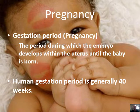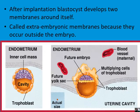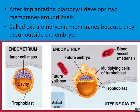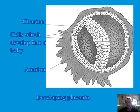After implantation, the blastocyst develops into two membranes around itself — the amnion and the chorion. The amnion is specifically for shock absorbing, and the chorion is for the diffusion of waste products. These two membranes are specifically called extra-embryonic membranes because they occur on the outside of the embryo.